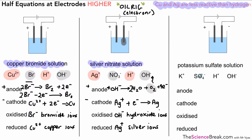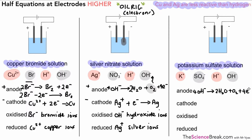Now we move on to the third and last example — potassium sulfate solution. The positive ions are potassium and hydrogen, and then there are the negative ions. At the anode, oxygen is produced unless a halide is present — there is no halide — so we get the same reaction as before: 4OH⁻ gives two molecules of water and oxygen gas, with four electrons lost. Alternatively written: four hydroxide ions minus four electrons is converted to 2H₂O and O₂.